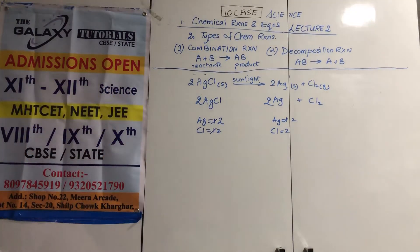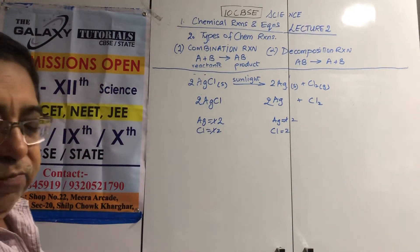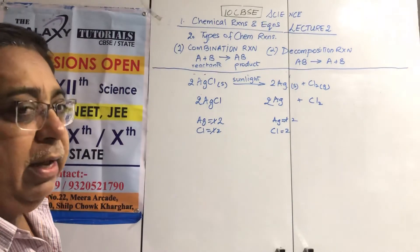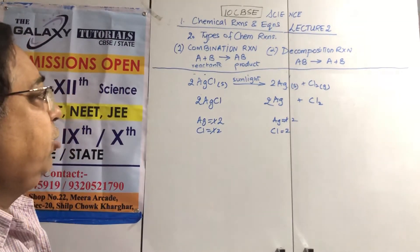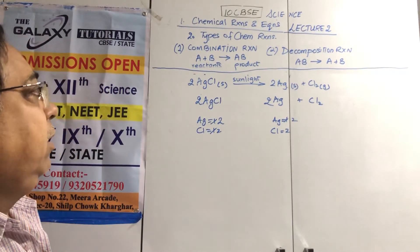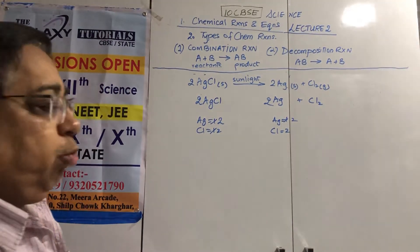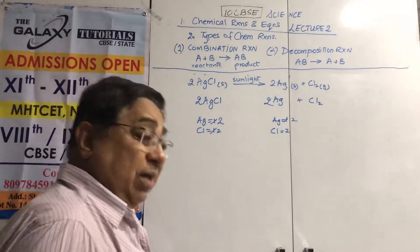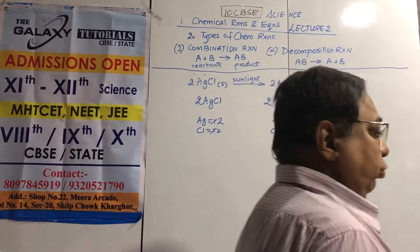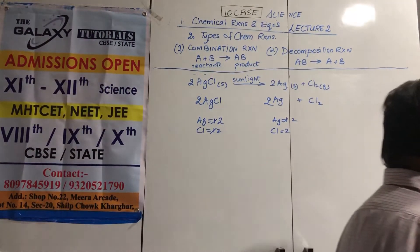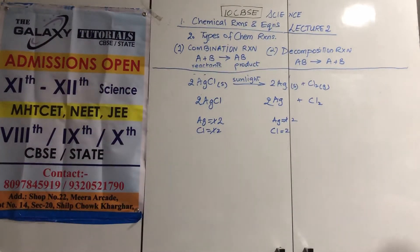Numbers must be the same for each and every element — nothing can appear or disappear. When silver chloride is exposed to sunlight, it decomposes into silver and chlorine gas. The silver slightly oxidizes and becomes black, showing the photographic image.